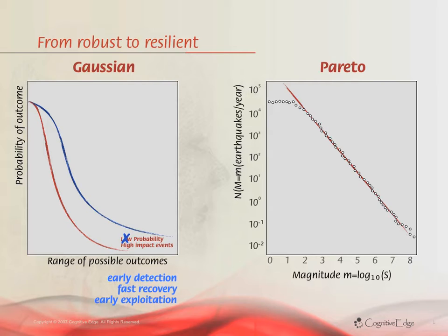The issue for large companies and for government is how to get that entrepreneurial capacity — to early exploit new opportunities, to early exploit traditional industry failure — how to get that into large organizations. And the resilience strategy is all about that.